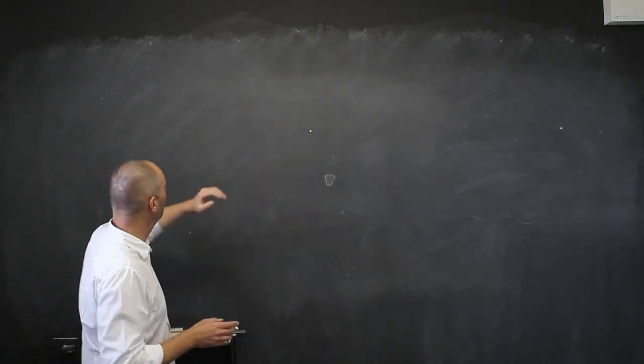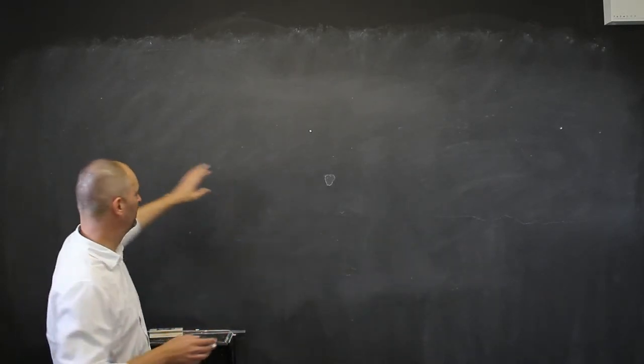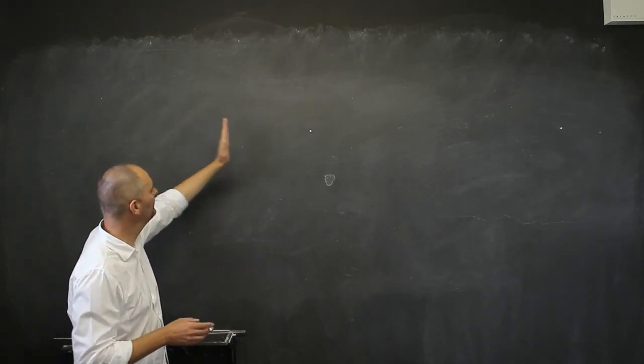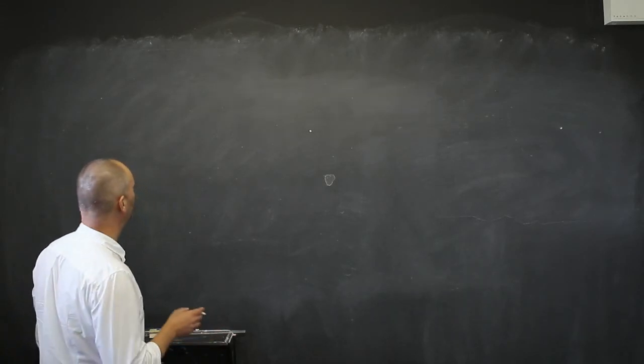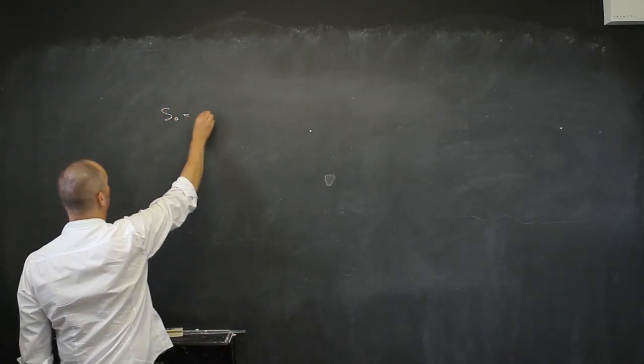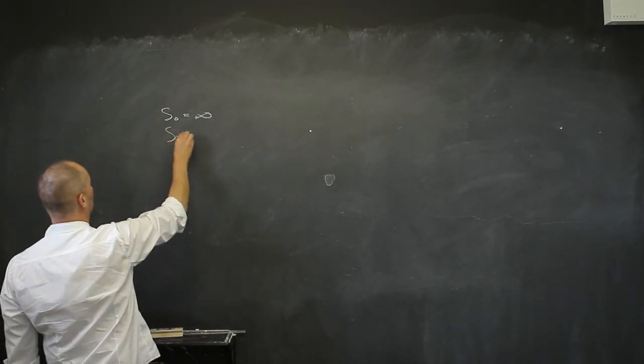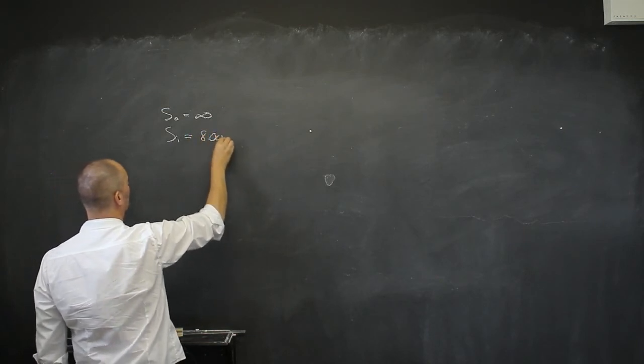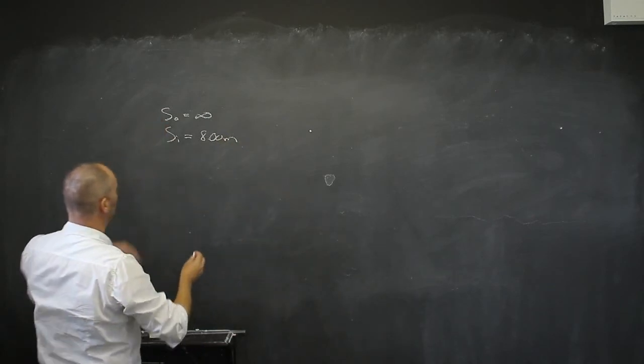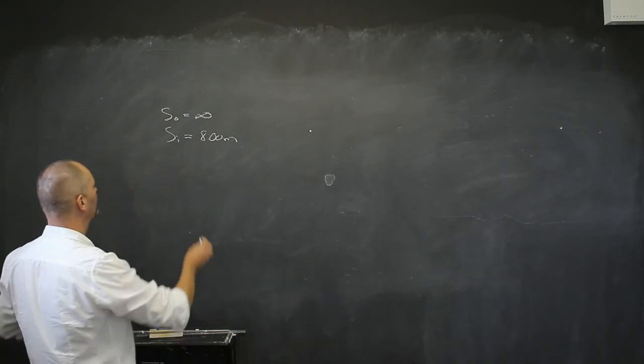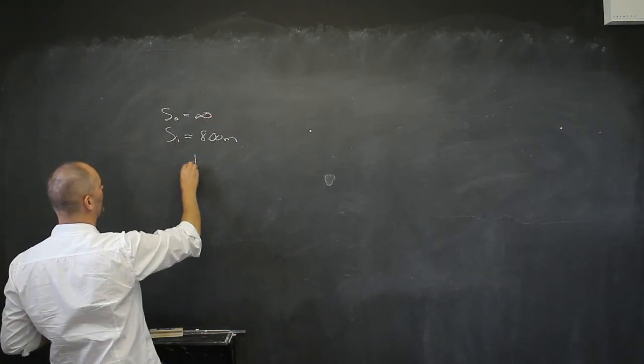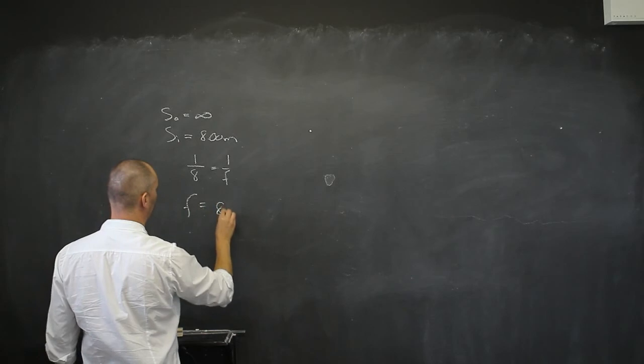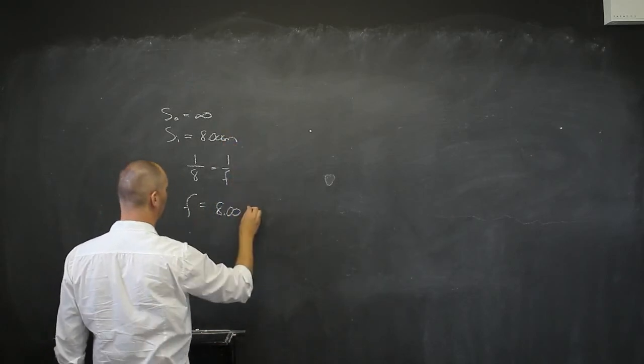If I have a lens and a film, and I take a photo of the landscape which is very far away, I need to place my image, my film, 8 centimeters from the lens. So what does that tell me? It tells me that S0 I can take as infinity, and my SI is 8 centimeters away. So I can work out what the focal distance is. There's going to be 1 over infinity which is 0, 1 divided by 8 is going to be 1 over f. And my focal distance then is 8.2 centimeters.